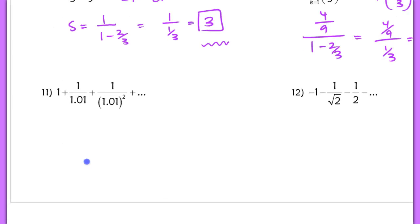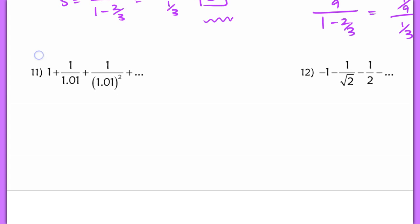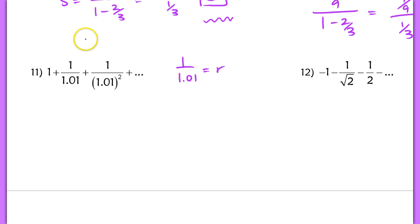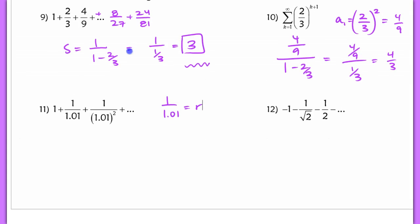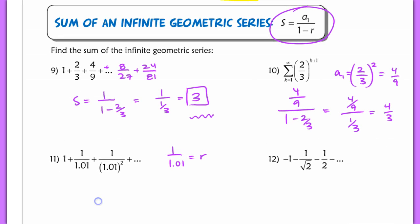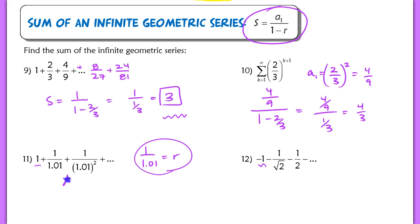In numbers 11 and 12, it's a little trickier to find the common ratio. Each term is being multiplied by 1 over 1.01, so that is your common ratio. Try numbers 11 and 12 on your own — in both cases you're given a sub 1 directly, and we've already found the common ratio. You can use a calculator for number 11, but do not use a calculator for number 12. Check your answers with the key.